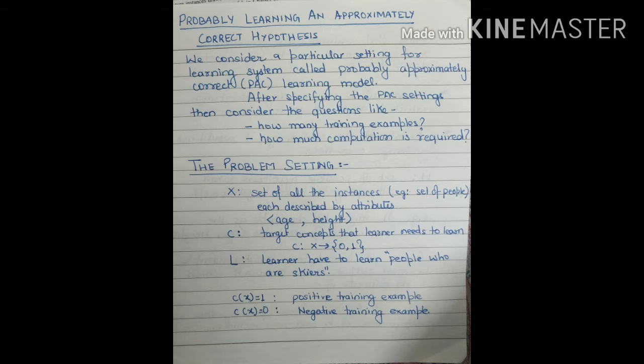To understand what kind of setting we have to provide, I am just taking an example. Here I consider X as a set of all instances — for example, a set of people described by the number of attributes. I am taking two attributes: one is age and one is height. C is the target concept that the learner needs to learn. In the case of a binary target class, it should be 0 or 1. L is the learner. The system has to learn whether people are skyers — finding people who are skyers and people who are not.